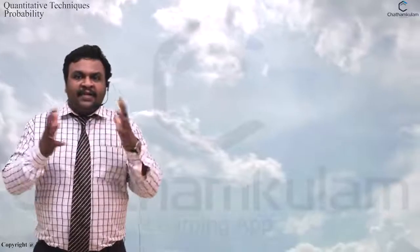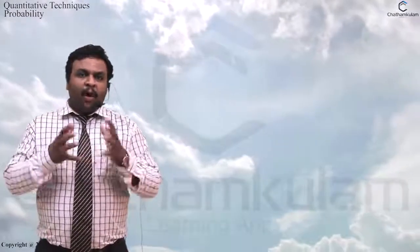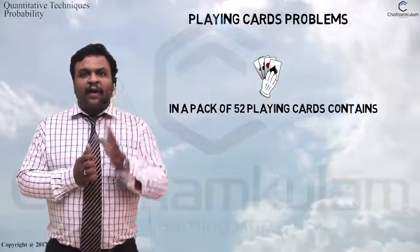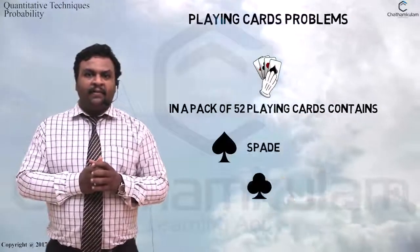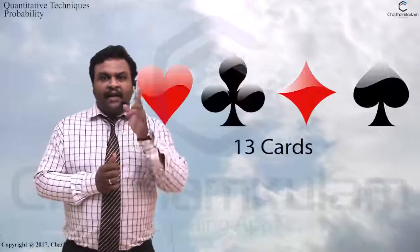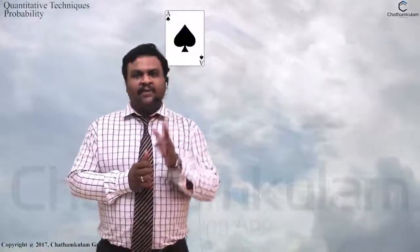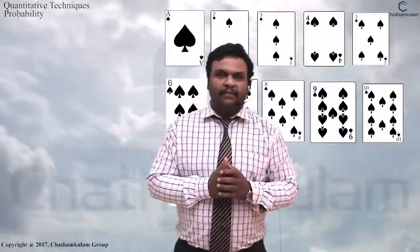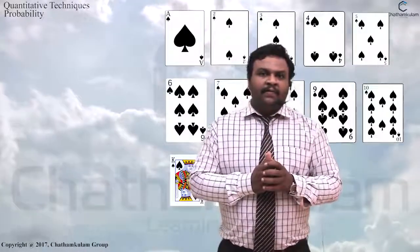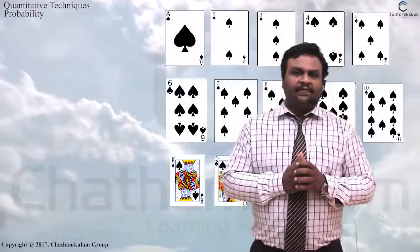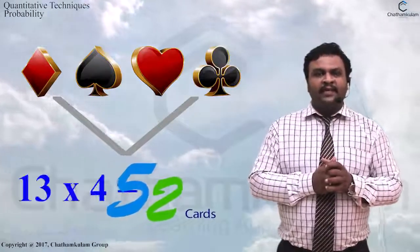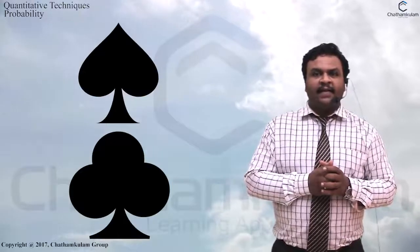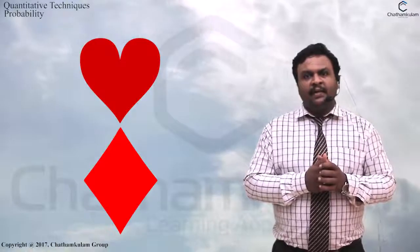Now let us discuss some examples in probability related to playing cards. In a pack of playing cards we have 52 cards with four categories: Spades, Clubs, Hearts, and Diamonds. In each category there are 13 cards, starting from Ace, 2, 3, 4, 5, 6, 7, 8, 9, 10, and then 3 court cards: King, Queen, and Jack. So the total is 13 into 4 equals 52 cards. Spades and Clubs are treated as black cards, while Hearts and Diamonds are red cards.